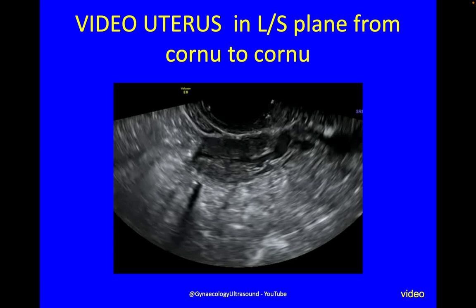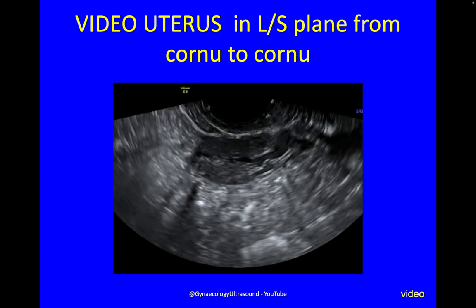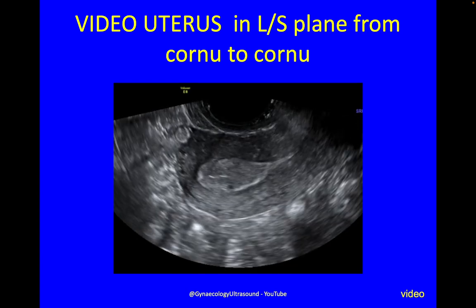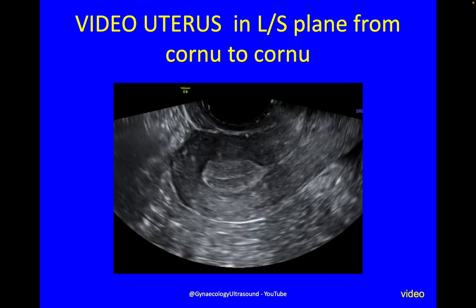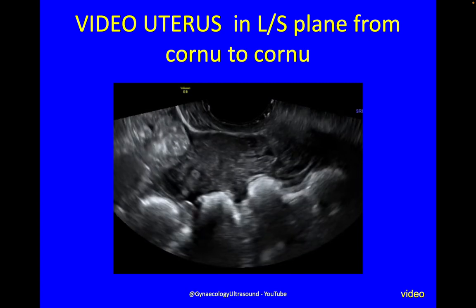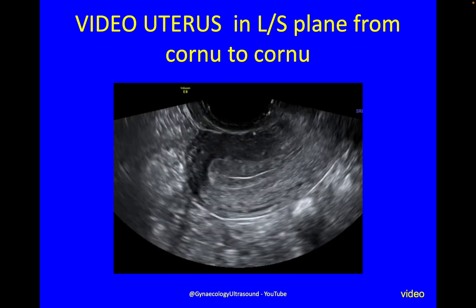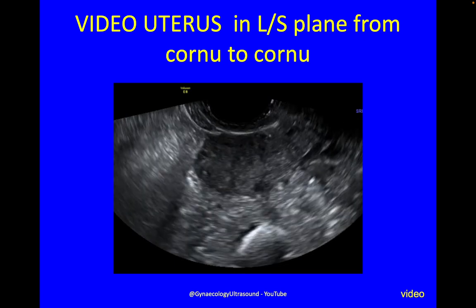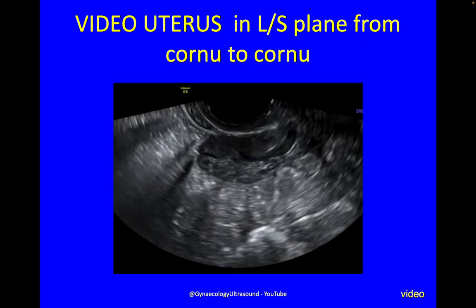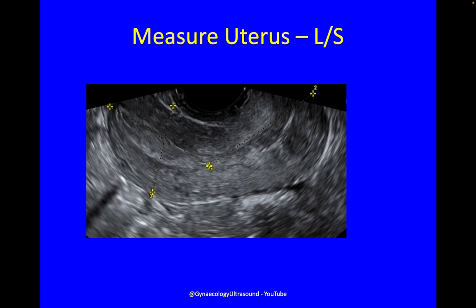We've got the uterus in the longitudinal plane. We're going to scan from cornua to cornua looking at the myometrium — looking for adenomyosis, looking for fibroids, also looking for shape — and do that systematically from side to side. Then you can measure your uterus once you know where the contours are. I measure from fundus to where it breaks in a straight line, then take a second measurement for the flexion. You always include the cervix in your measurements, add those two up, and then at right angles do a depth measurement.